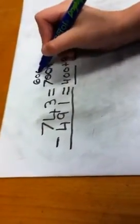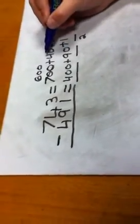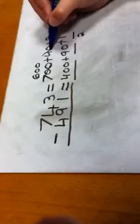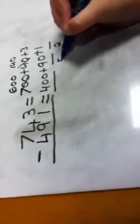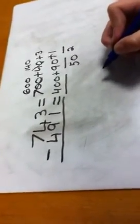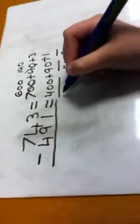Then from 740 to 600 you take the hundred and add it to the 40, which will make it 140. 140 minus 90 equals 50, and then 600 minus 400 equals 200.